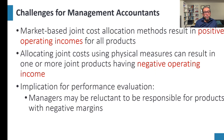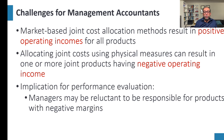The challenge for management accountants: market-based joint cost allocation methods result in positive operating income for all products. Allocating joint cost using physical measure can result in one or more products having a negative operating income — it is a more rudimentary approach compared to market-based methods. For performance evaluation, managers may be reluctant to be responsible for products with negative margins, since those products are seen as cost centers that are not generating revenue.